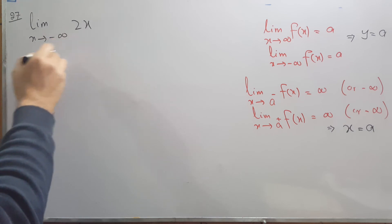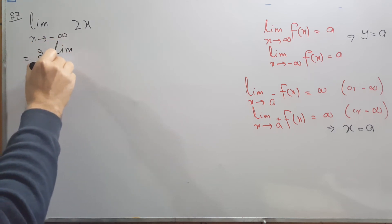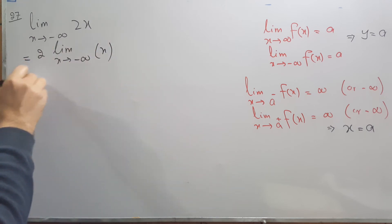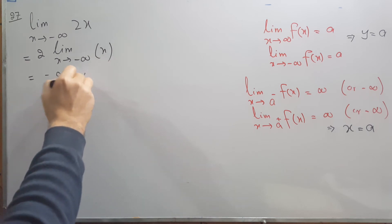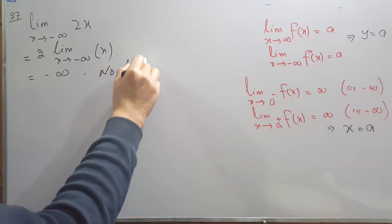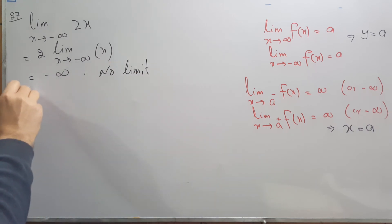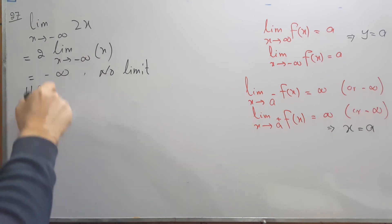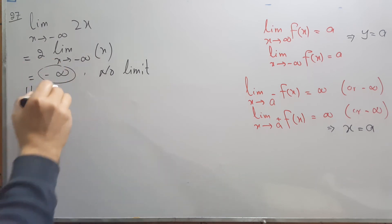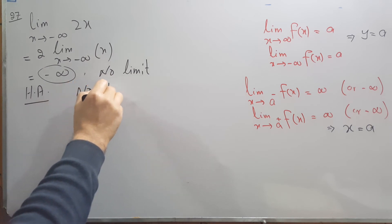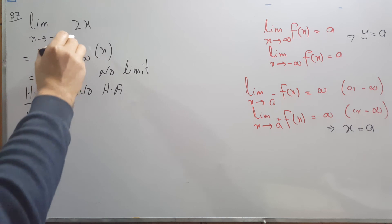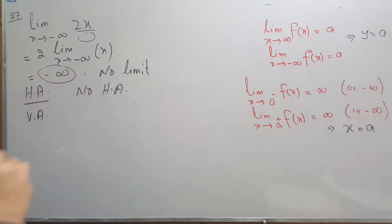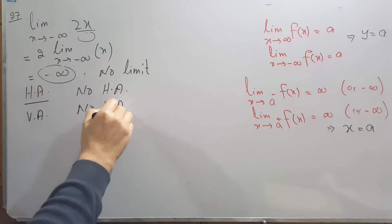The next problem: if we apply the rules and substitute the limit, this gives minus infinity — so there is no finite limit. Therefore there is no horizontal asymptote. For the vertical asymptote, we need something in the denominator to equal zero, but there is nothing in the denominator here, so there is no vertical asymptote in this case.